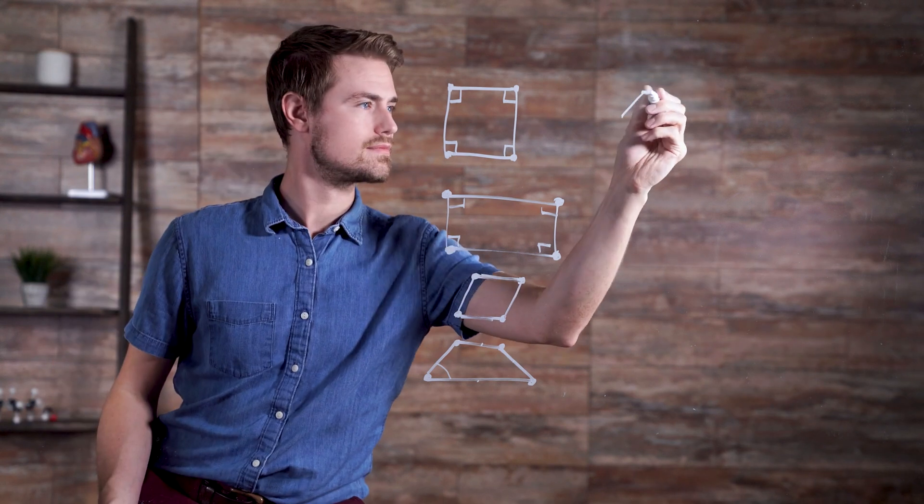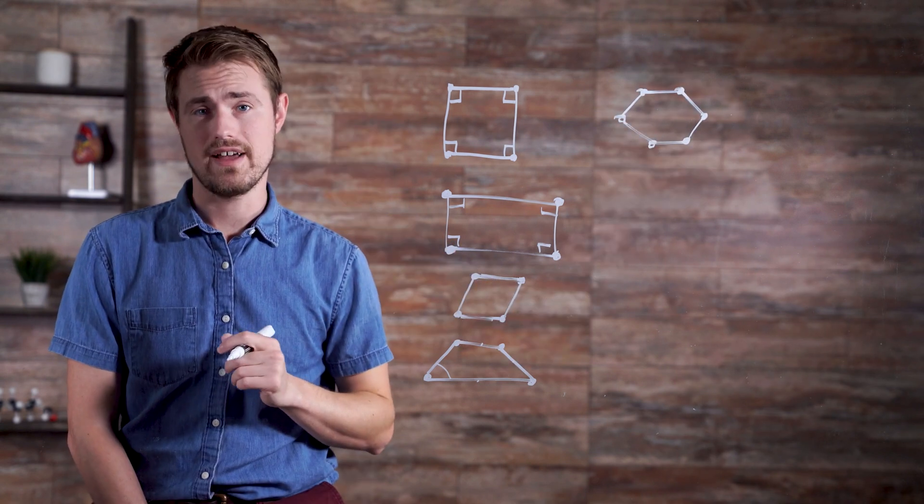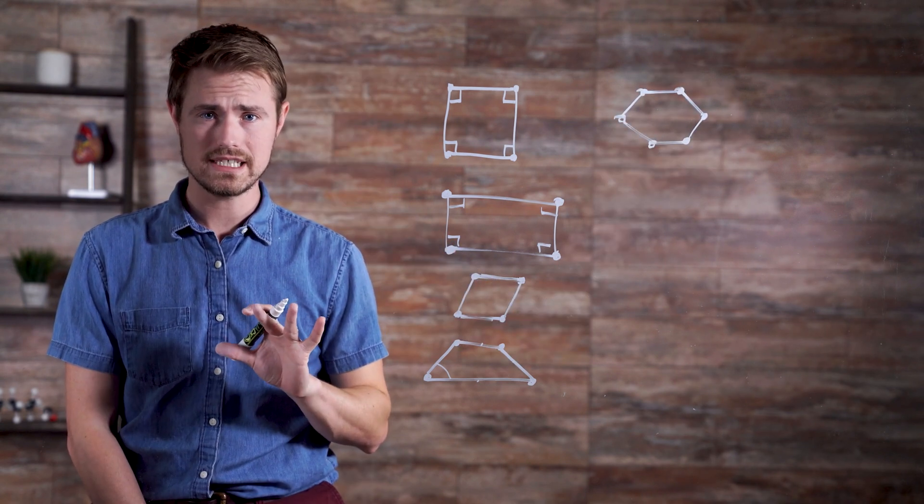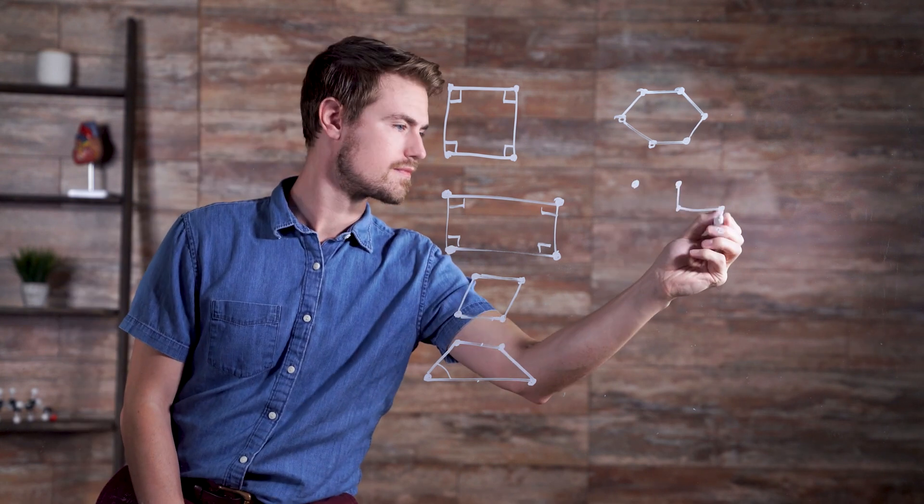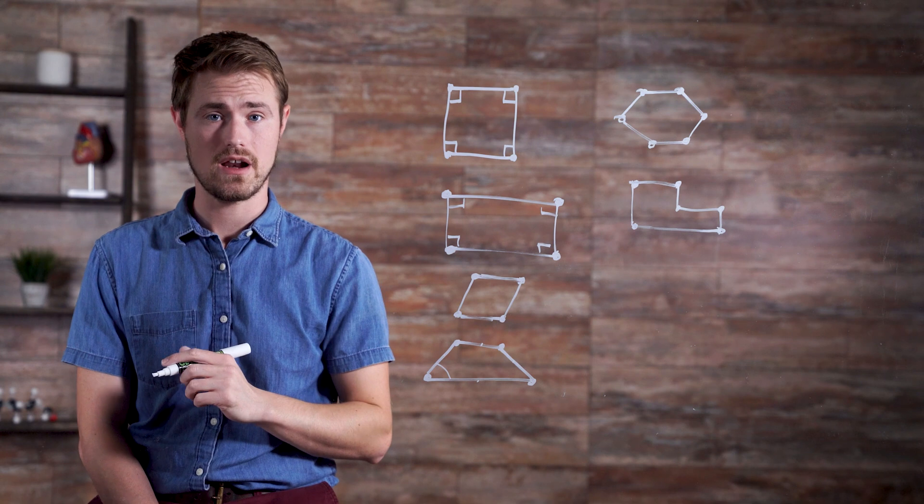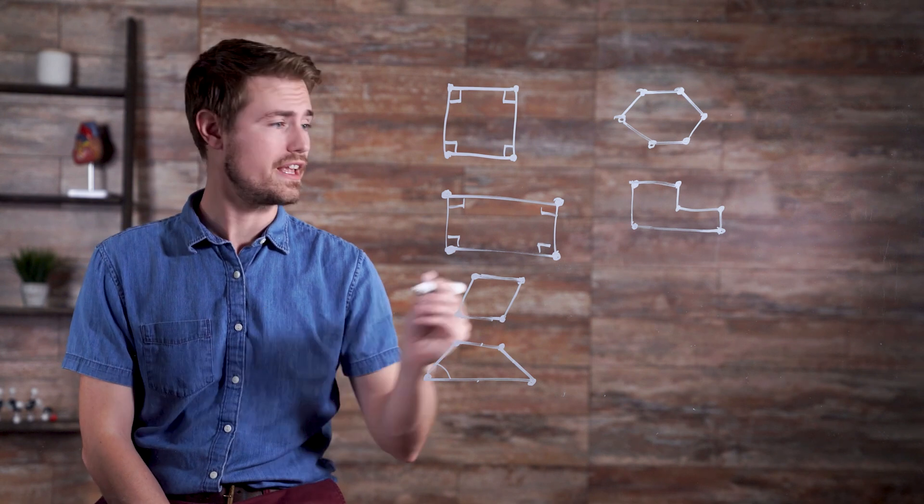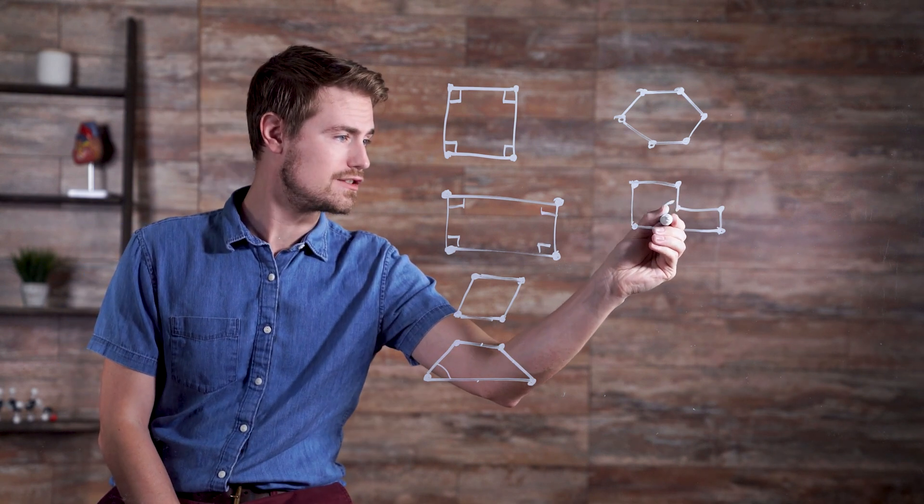For example, this is a convex hexagon. All the vertices measure less than 180 degrees. This is a concave hexagon. One vertex measures more than 180 degrees.